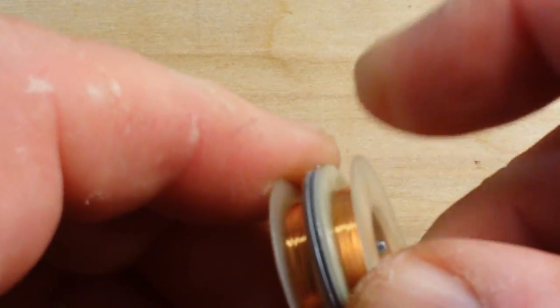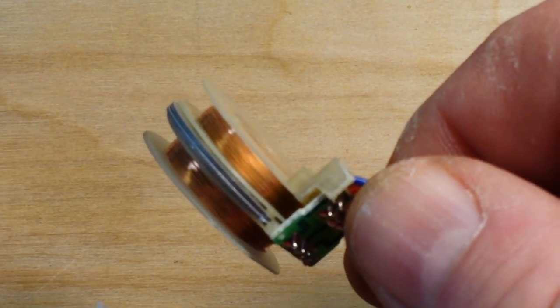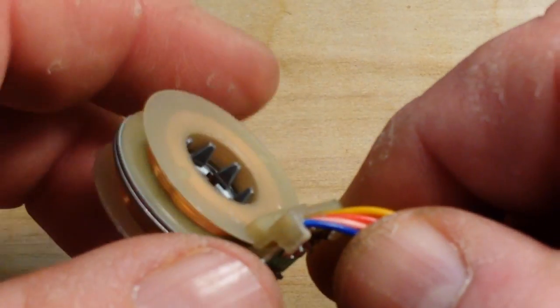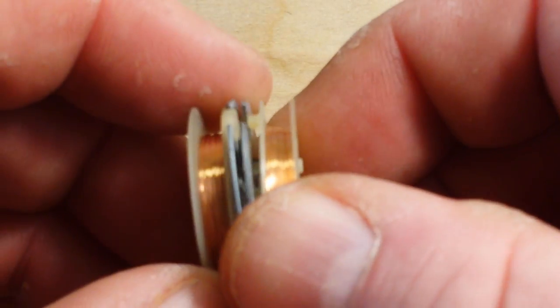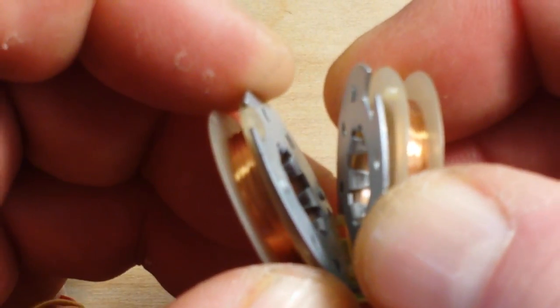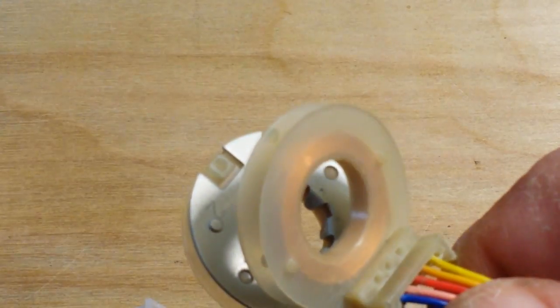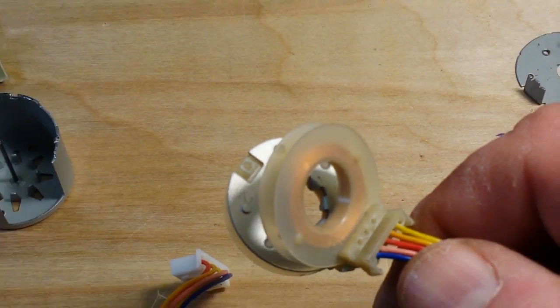And here we see the parts of the motor. What we have here are two coils that are separated by another one of these steel plates that seem to be everywhere inside this thing.